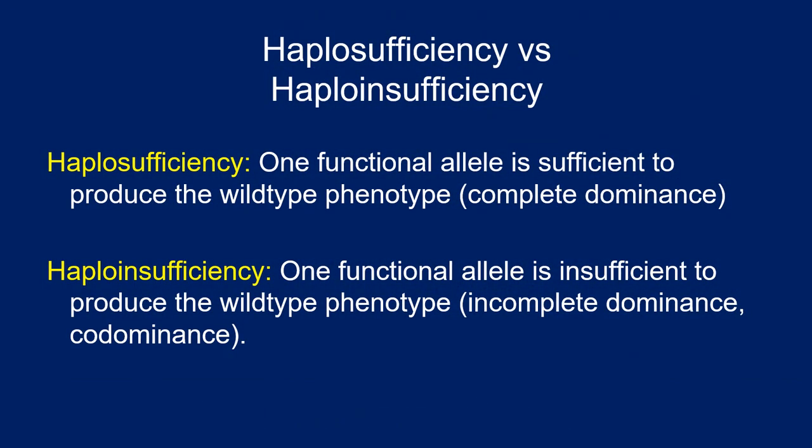The ratios created by simple Mendelian genetics are simple because we're dealing with genes that come in two flavors and one overrides the other. This is known as complete dominance. If we have two dominant alleles we'll see the dominant phenotype, which is usually the wild type or normal phenotype. Even if we just have one dominant allele, that's enough — this is known as haplosufficiency, meaning half the alleles being dominant is sufficient to give us the wild type phenotype.